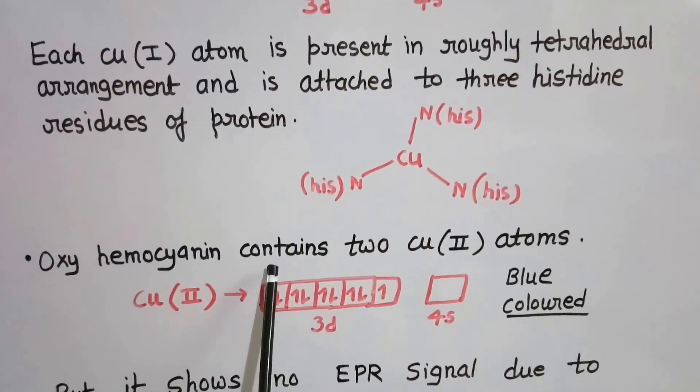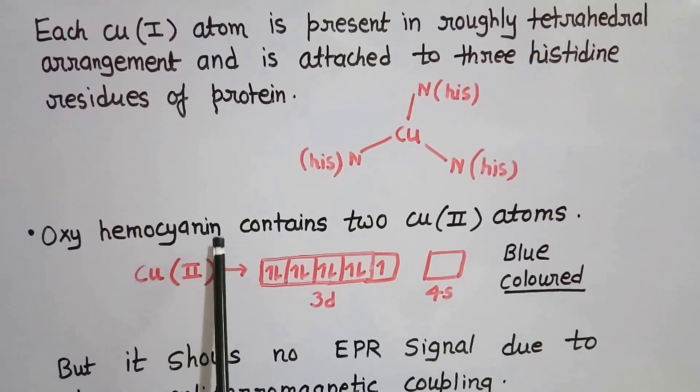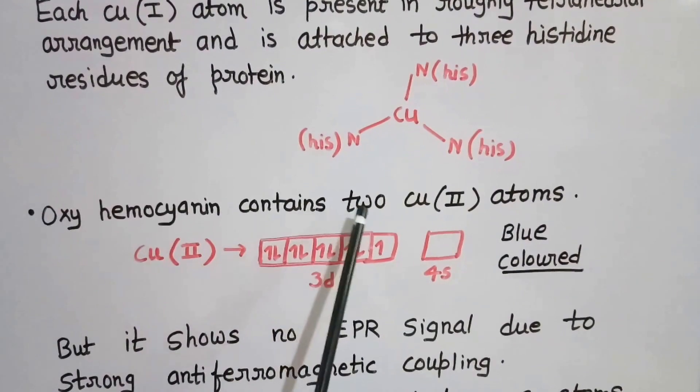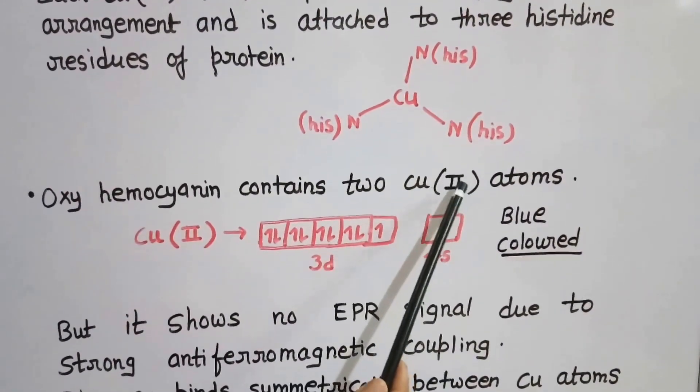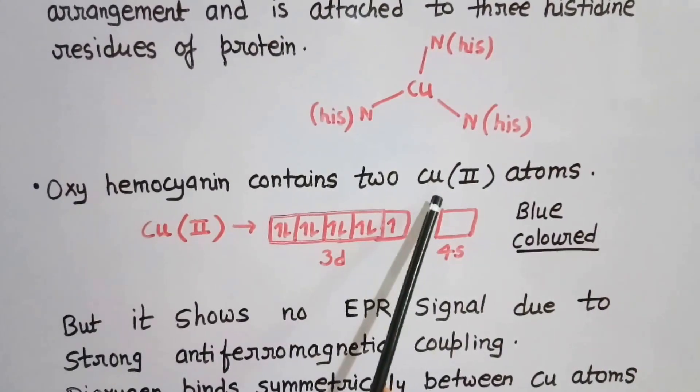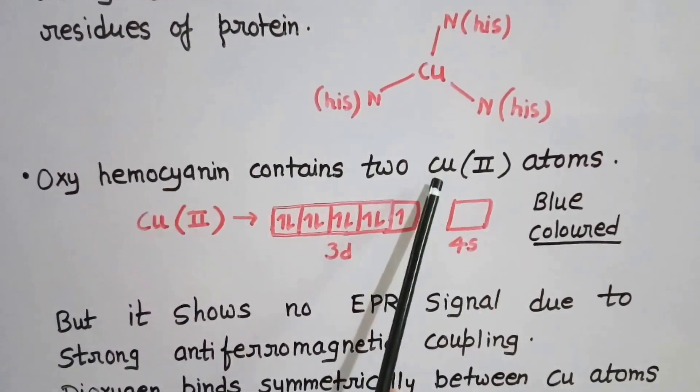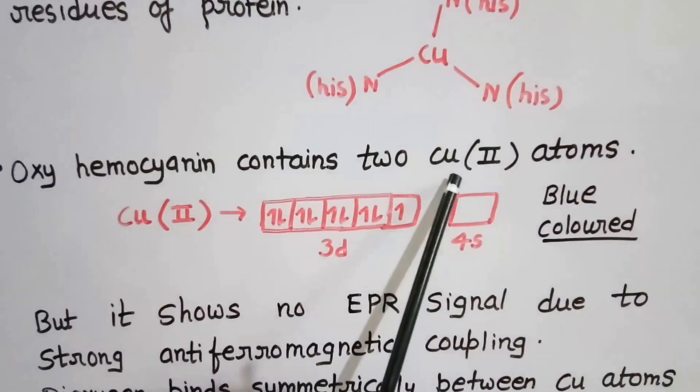When it combines with oxygen, when oxy hemocyanin is formed, it possesses two Cu(II) atoms. Copper is oxidized from +1 to +2 oxidation state, and two electrons are given for the reduction of oxygen.